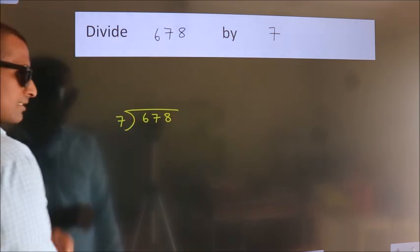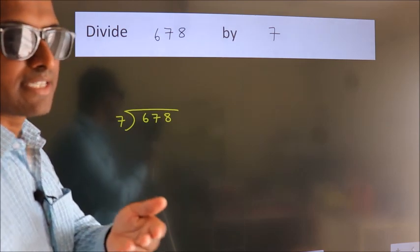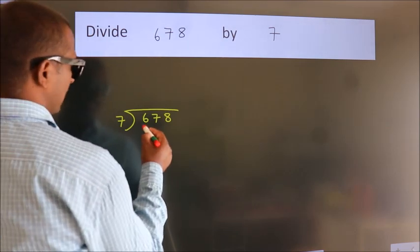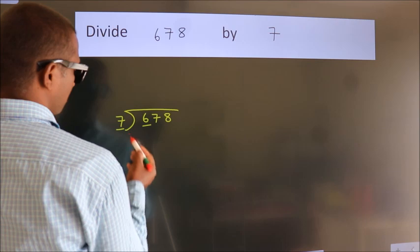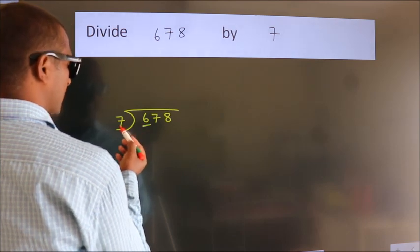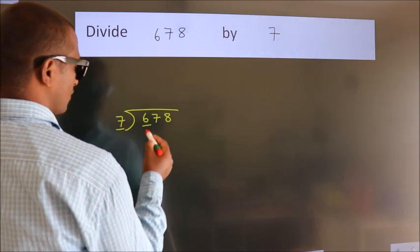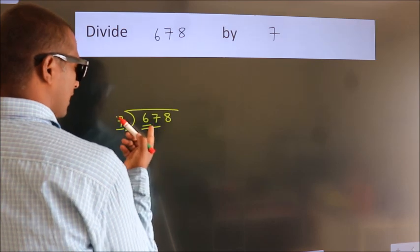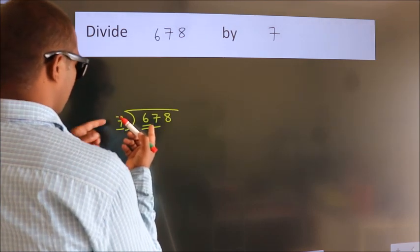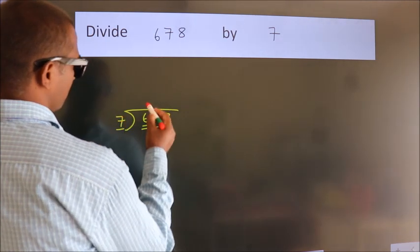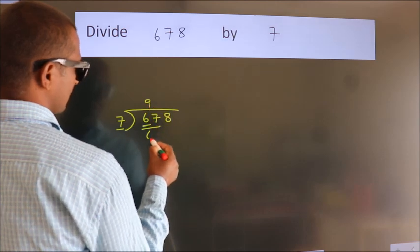This is your step 1. Next, here we have 6, here 7. 6 is smaller than 7. So we should take two numbers, 67. A number close to 67 in the 7 table is 7 nines, 63.